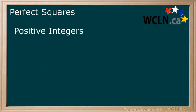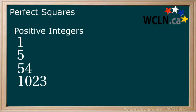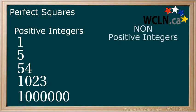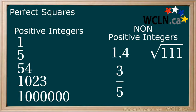Here are some examples of positive integers: 1, 5, 54, 1023, 1 million. Here are some examples of non-positive integers: 1.4, 3 over 5, the square root of 111, negative 90.